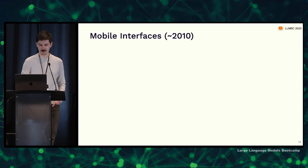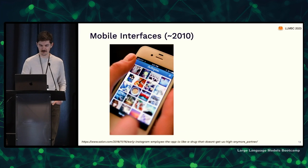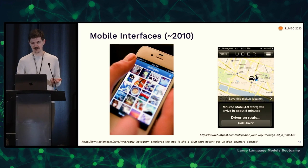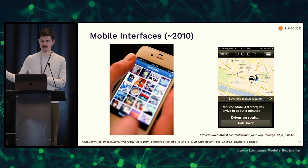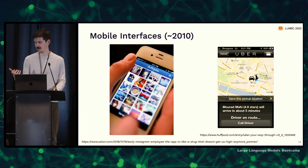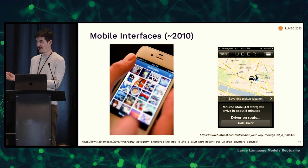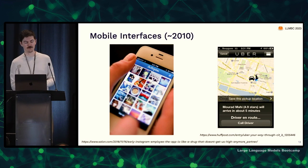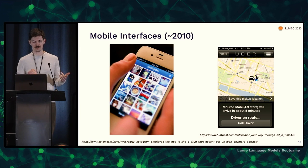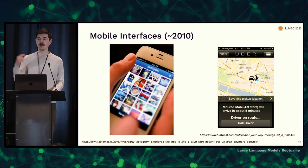Another step change in user interfaces was mobile — when the iPhone came out. It placed a camera in your hand at all times and a way to see pictures. It also tracks your location at all times, which enabled things like Uber, because this thing knows where you are and you can just request to be picked up there. Before that, you'd have to open a map and figure out and explain where you are. Visual input/output and location tracking were a real big step change.